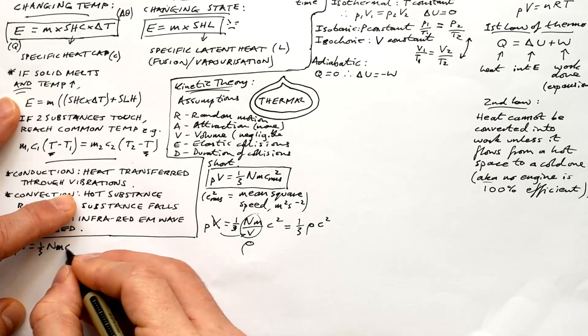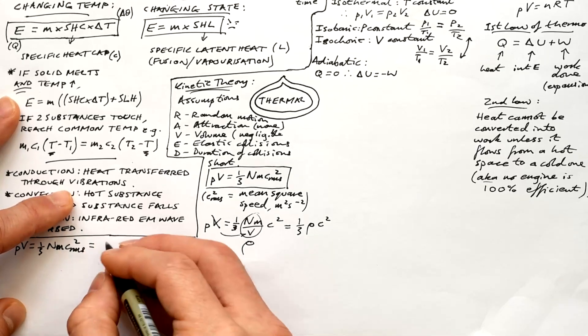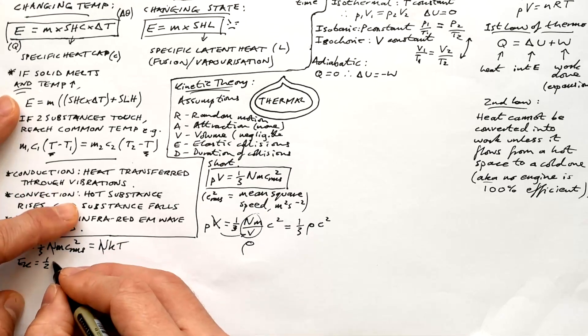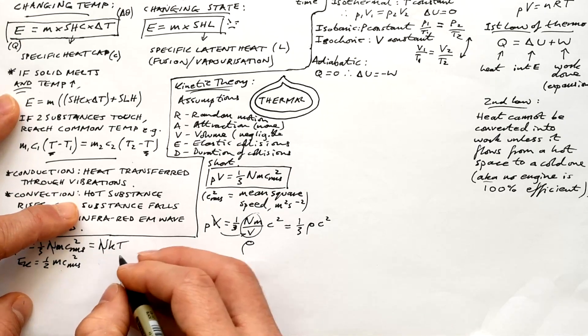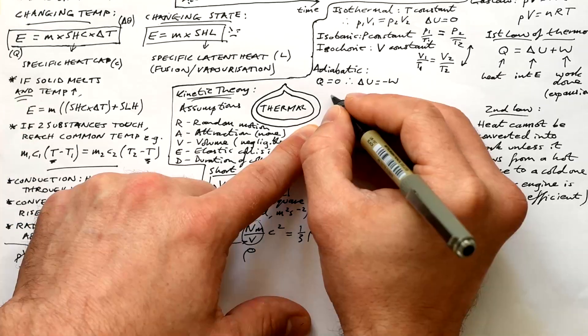Let's prove EK equals three halves KT. If you know PV equals a third NMC squared, then we know that's also equal to NKT. Canceling the Ns, we end up with a third MC squared equals KT. Very similar to half MC squared for kinetic energy. Equate those two and we end up with kinetic energy is equal to three halves KT.